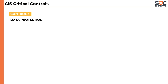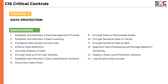The third control is all about data protection. This becomes very important for companies that store sensitive data like user information, credit card information, or patient records. There are a total of 14 safeguards defined in this control, which covers developing a process and technical controls to identify, classify, securely handle, retain, and dispose of data — for example, use of encryption, deploying a DLP solution, and logging access to sensitive data.